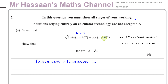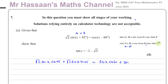For cosine of (x minus 60), we use cosine A minus B. Here x is A and 60 is B. So we have cosine A times cosine B, which is cosine x times cosine 60, and since there's a minus between them, we get plus sine A times sine B, which is sine x times sine 60.